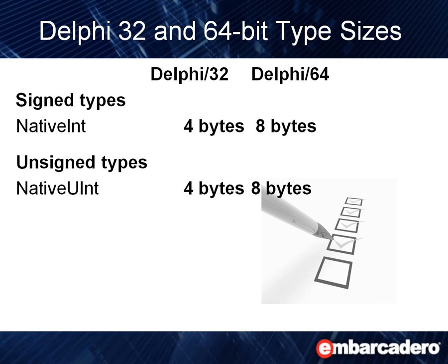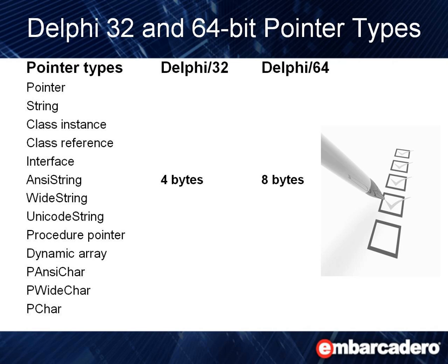This slide shows the difference in 32-bit Delphi and 64-bit Delphi as it relates to native integers and unsigned integers. All the different pointer types — including pointers, strings (which are really pointers to strings), interfaces, Unicode strings, and procedure pointers — are all 4 bytes in 32-bit Delphi and 8 bytes in 64-bit Delphi.